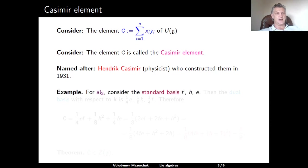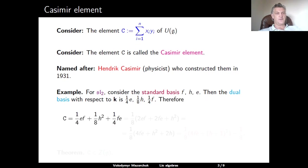As an example, consider the Lie algebra SL2 with a standard basis F, H, and E. It is easy to compute that the dual basis with respect to the Killing form consists of E divided by 4, H divided by 8, and F divided by 4. Therefore, we can now compute that the Casimir element is equal to EF divided by 4 plus H squared divided by 8 plus FE divided by 4.